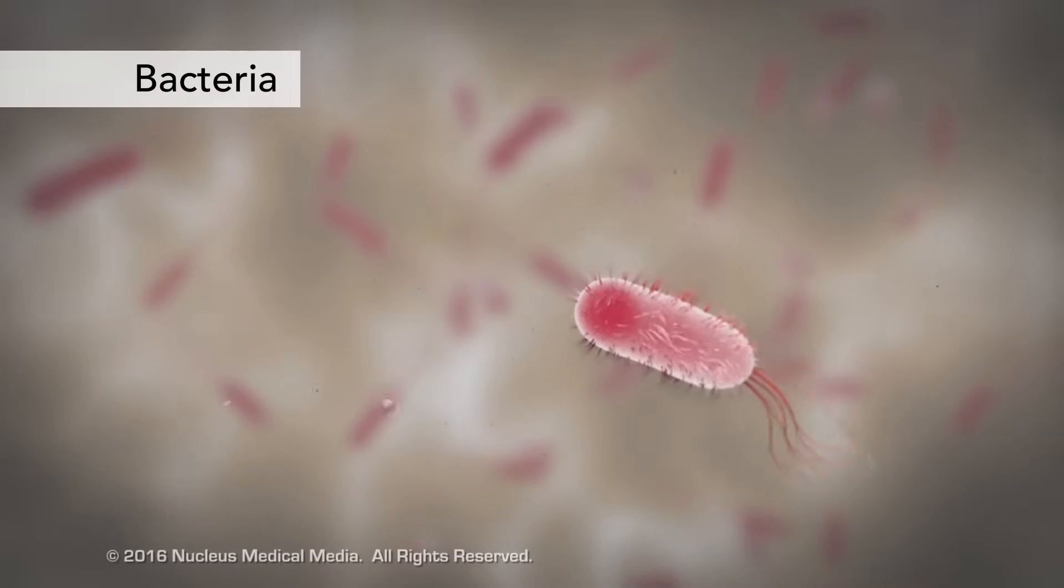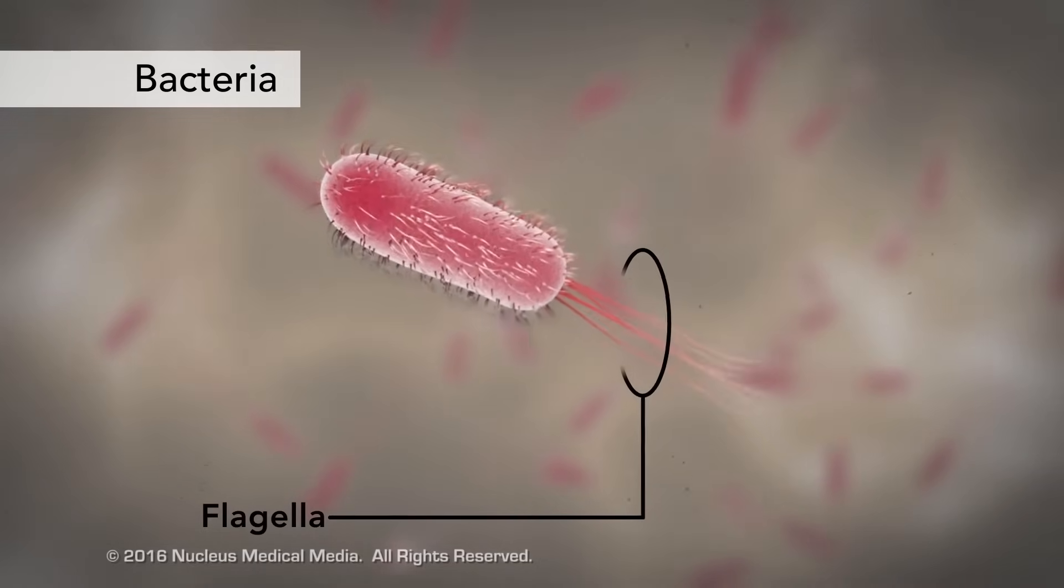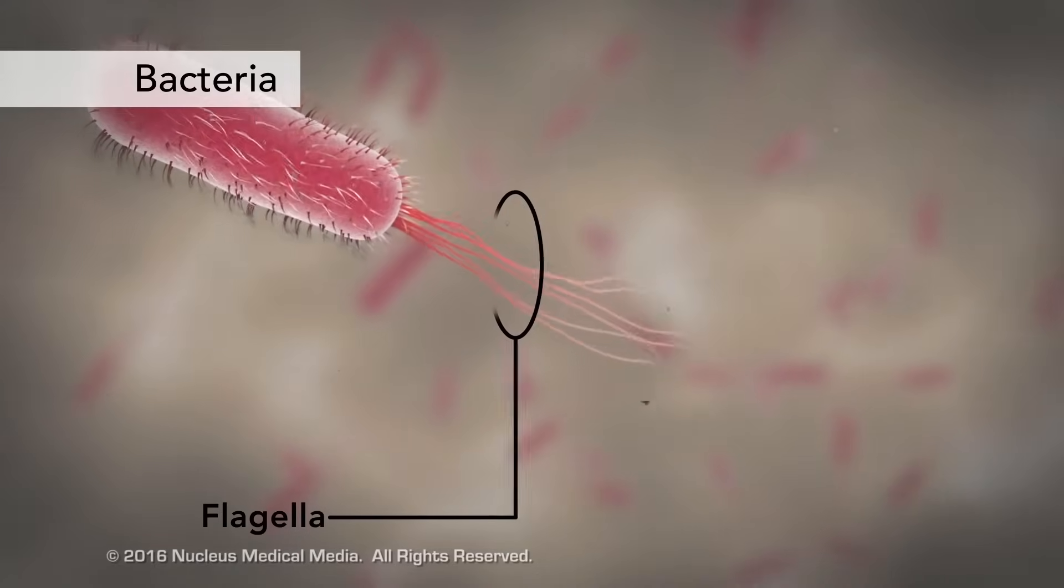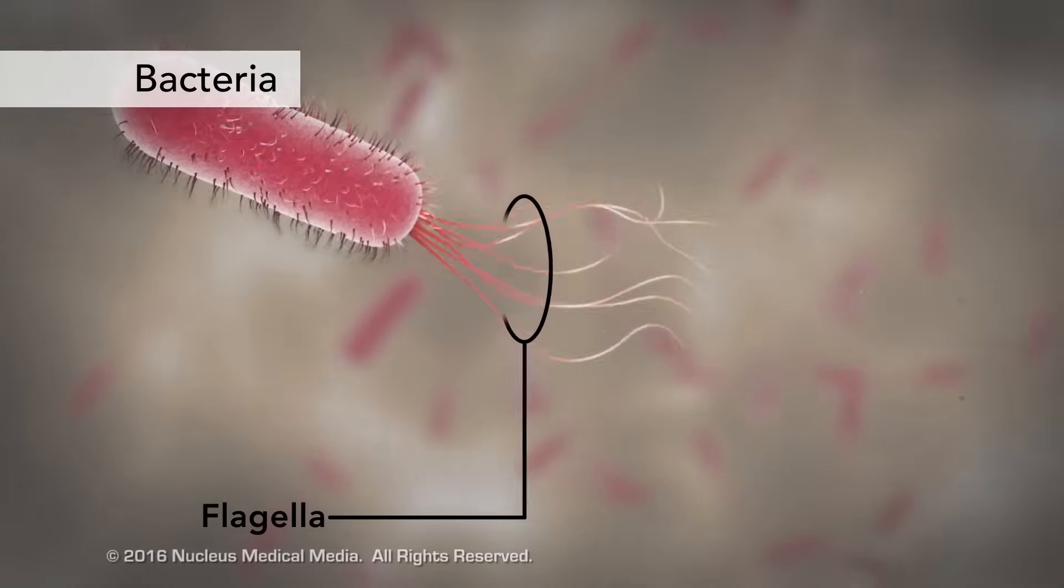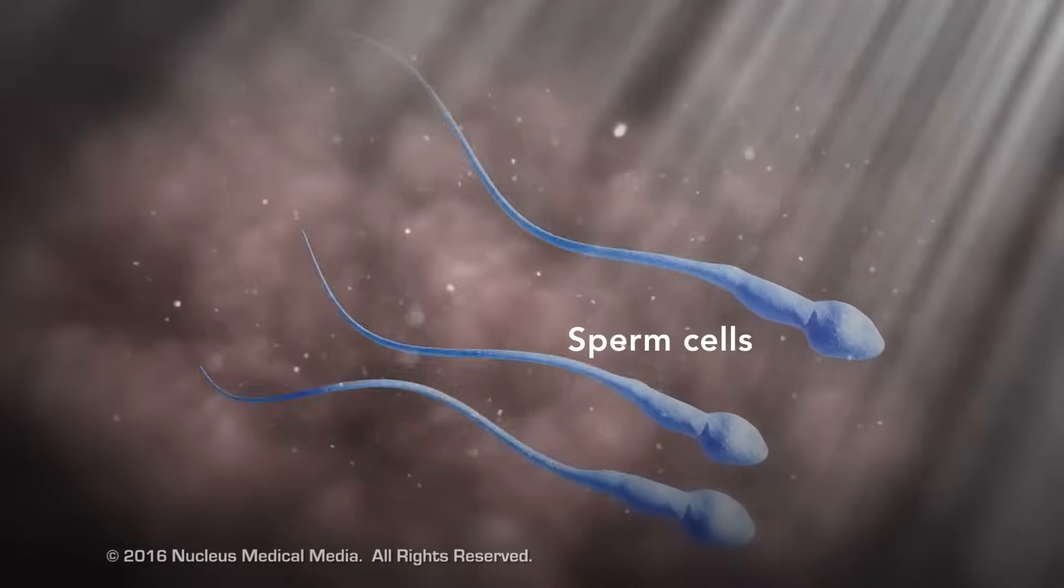Another unique feature in some cells is flagella. Some bacteria have flagella. A flagellum is like a little tail that can help a cell move or propel itself. The only human cell that has a flagellum is a sperm cell.